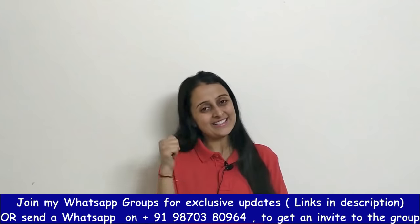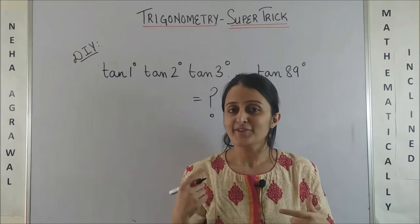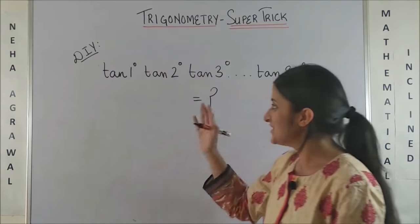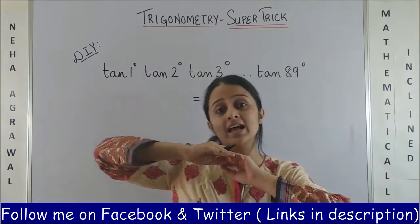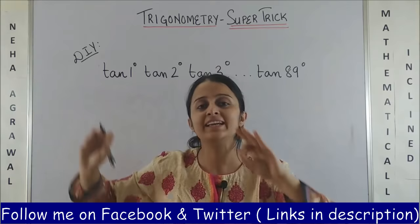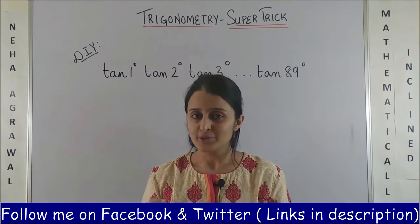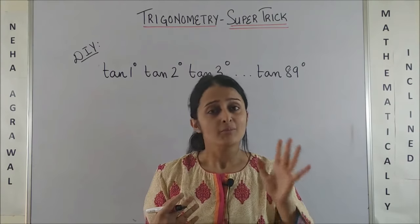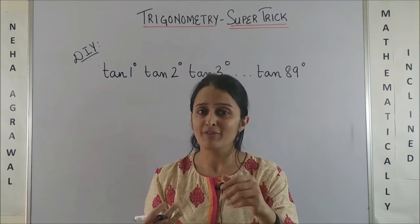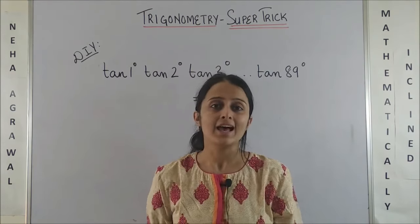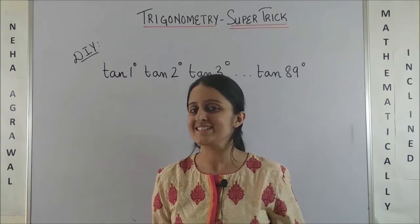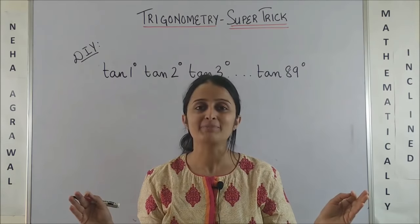And now continue watching. It is time for your do it yourself question. Yes, you have to get the value for tan 1° tan 2° tan 3° and the product goes up to tan 89°. I am sure by the time we are talking more than half of you have already got the answer. So, don't wait, comment fast as you know the top 3 accurate answers always get named in my upcoming videos.